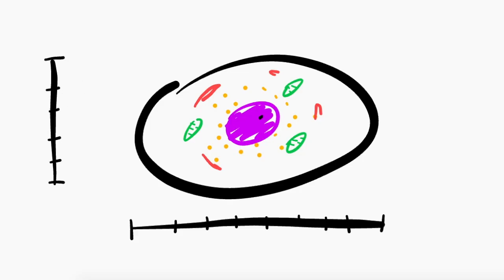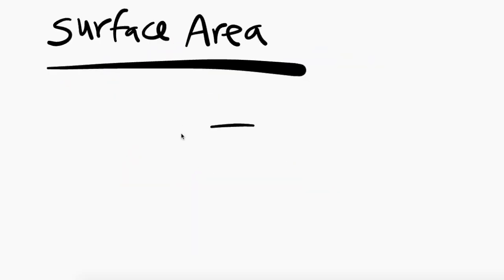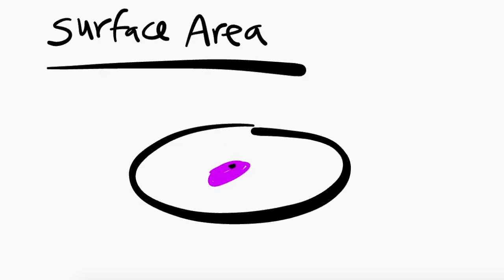Scientists have concluded that efficiency has a lot to do with something called surface area to volume ratio. The definition of surface area is the outside part or outermost layer of something. Now in this case we're talking about the cell membrane, the skin of the cell.